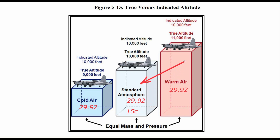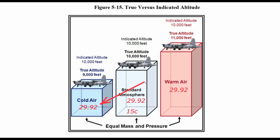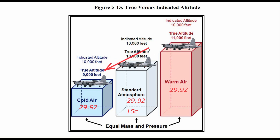Under standard atmospheric conditions we have an indicated altitude of 10,000 feet and a true altitude of 10,000 feet. But in the cold air mass we have a problem — the pressure is still 29.92, but the temperature is lower so the air is heavier, more compressed. With the same air mass and same pressure, the indicated altitude would be 10,000 feet but our true altitude is only 9,000 feet.